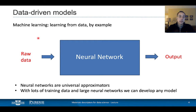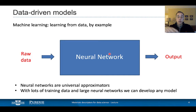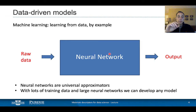The idea is you have an output that you're interested in predicting, and you have raw data that describes, say, the material that leads to that output. So if you have lots of examples of input and output, you can train a neural network — or other models, because neural networks are not the only models. Neural networks are known as universal approximators, and that means that if you have lots of data and there's a relationship between the input data and the output, the neural network can be trained to map those inputs to the outputs.